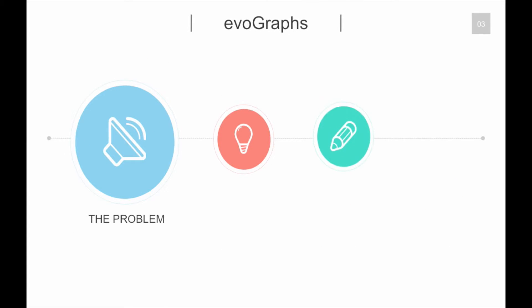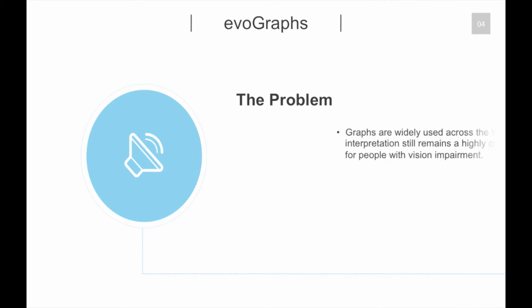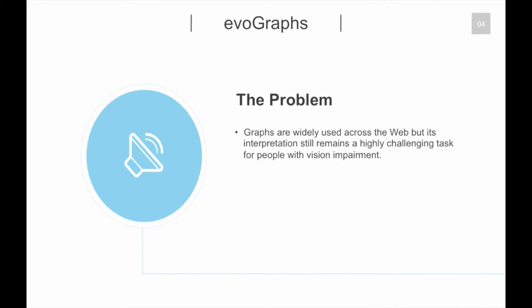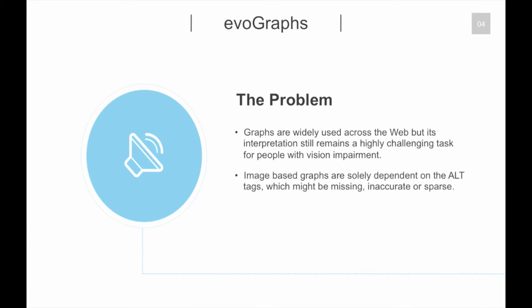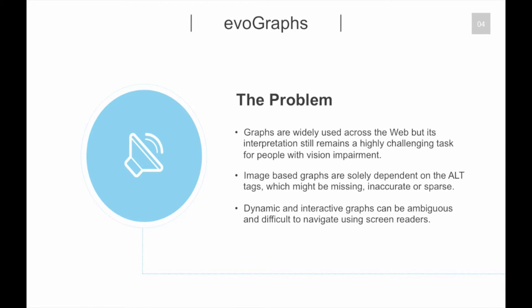The Problem. Graphs are widely used across the web, but their interpretation still remains a highly challenging task for people with vision impairment. Image-based graphs are solely dependent on the ALT tags, which might be missing, inaccurate, or sparse. Dynamic and interactive graphs can be ambiguous and difficult to navigate using screen readers.